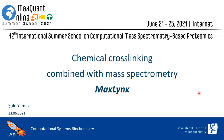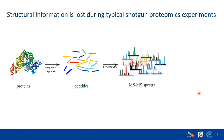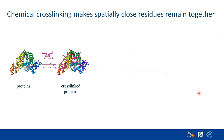Today I will introduce cross-linking and also talk about the new thing in MaxQuant, MaxLinx. Throughout the days during the summer school, you already heard several times about typical shotgun proteomics experiments. But what's typically done during this workflow, we are losing the structural information. To deal with this, one approach is to add cross-linking. Cross-linking will retain some residues that are very close, and then we can gain information regarding interaction or structure.